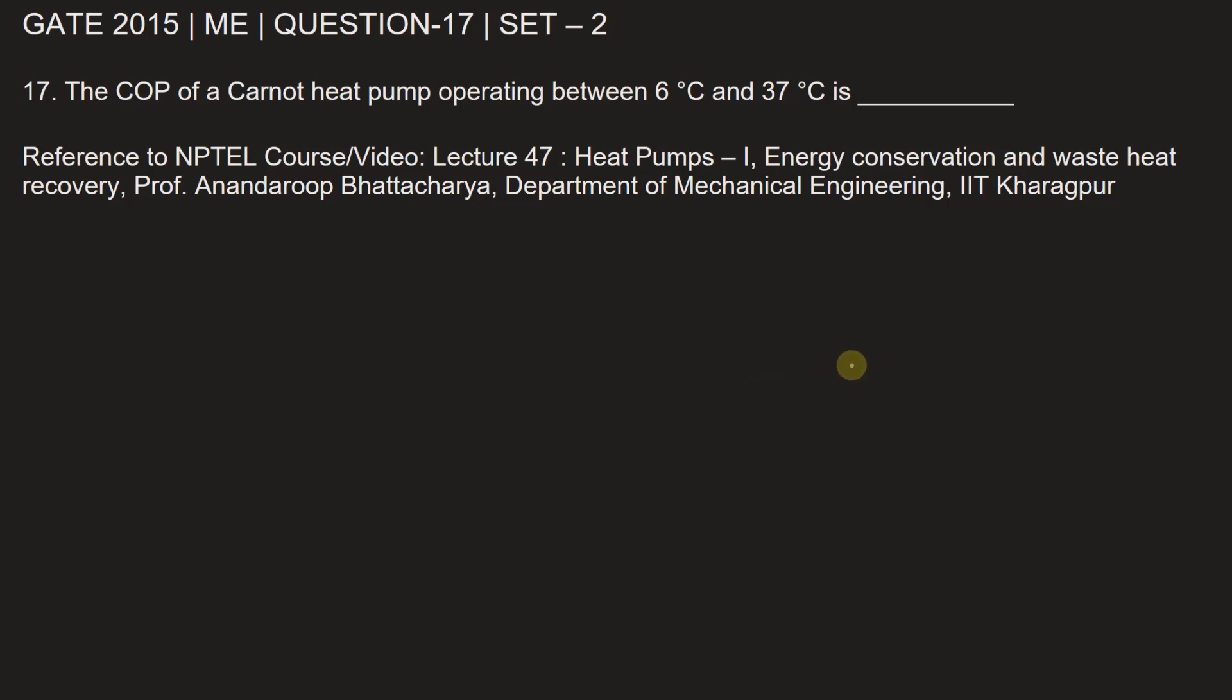Let's draw a heat pump here. It is extracting heat from the colder body. In the problem it is given that the temperature of the colder body is 6 degrees Celsius, or in Kelvin 273 plus 6, so this will be 279 Kelvin, and it pumps heat to a warmer body.